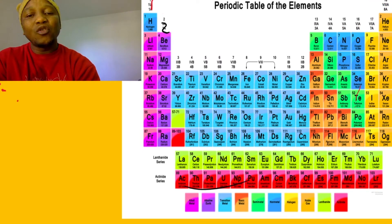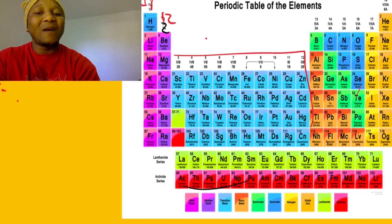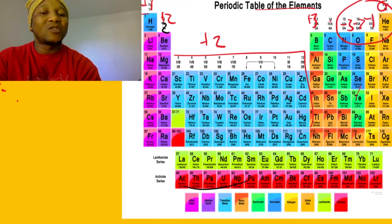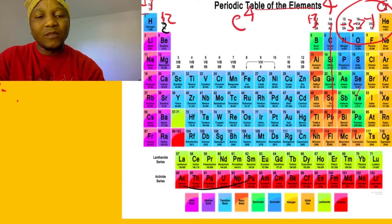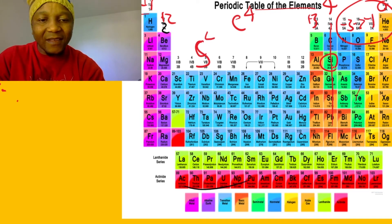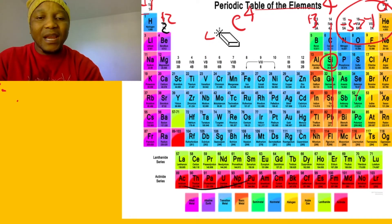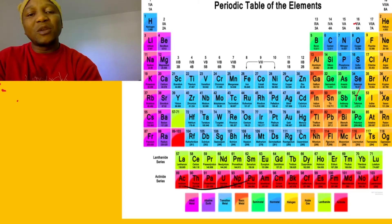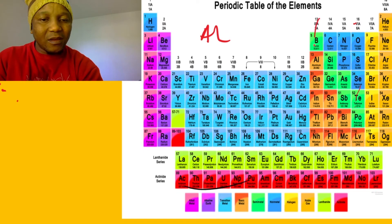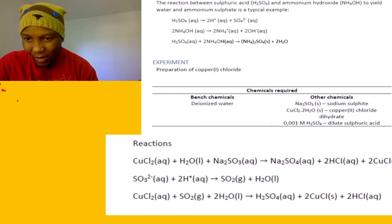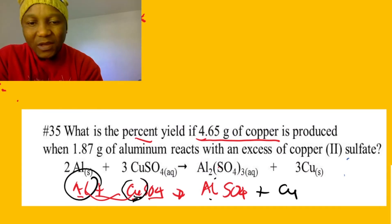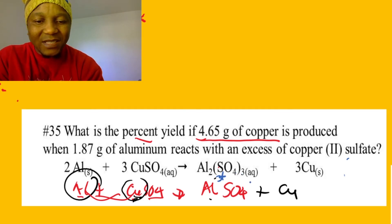Quick summary: metals on the left — positive one, positive two, positive three. Non-metals — zero, negative one, negative two, negative three. Group four can be metal or non-metal, valence is four. For example, carbon is four and silicon is also four. Now let's go back to the question. Aluminum is in group three, so the valence is three positive — that's how you get the valence of aluminum.